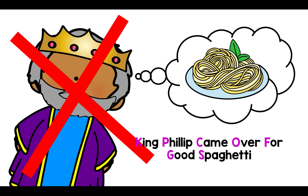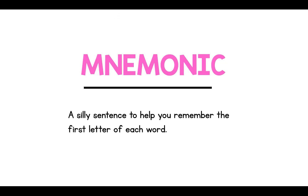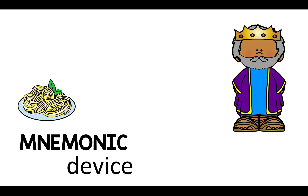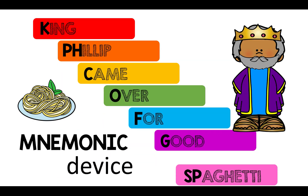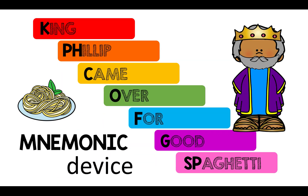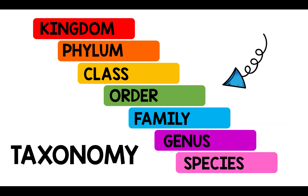It's just a mnemonic device. What's a mnemonic device? It's a sentence to help you remember the first letter of each word. 'King Philip came over for good spaghetti' is a mnemonic that stands for Kingdom, Filum, Class, Order, Family, Genus, Species. Oh, well, why didn't you just say so?